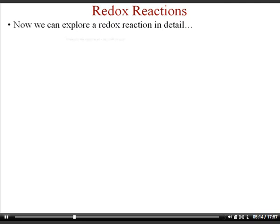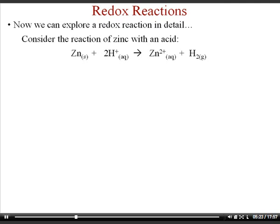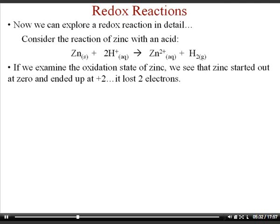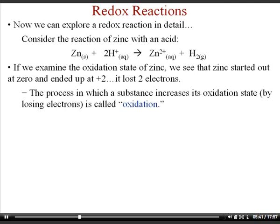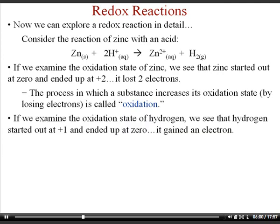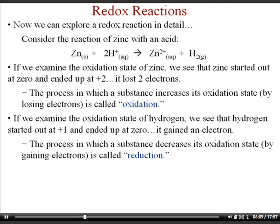Now we're going to look at a simple redox reaction: the reaction of zinc with an acid. Zinc solid reacts with hydrogen ions to produce zinc ions and hydrogen gas. Zinc starts with an oxidation number of zero and ends up at positive two — the only way to go from zero to positive two is by losing two electrons. The process in which a substance increases its oxidation state by losing electrons is called oxidation. For hydrogen, it starts at positive one and goes down to zero, meaning each hydrogen gained one electron. The process in which a substance decreases its oxidation state by gaining electrons is called reduction.